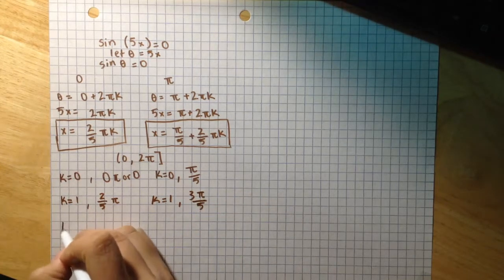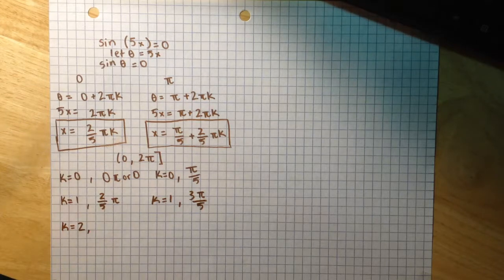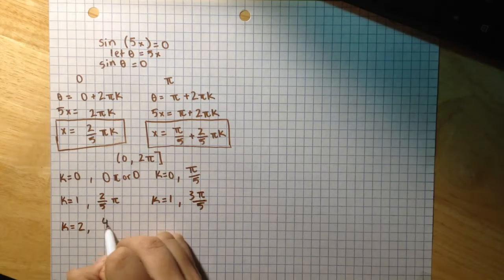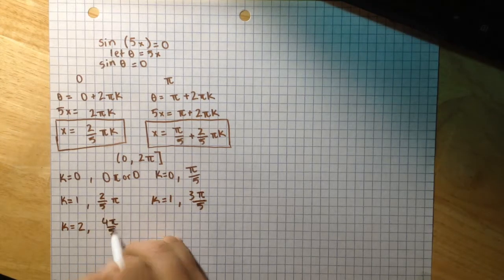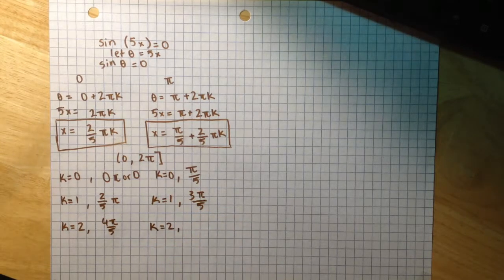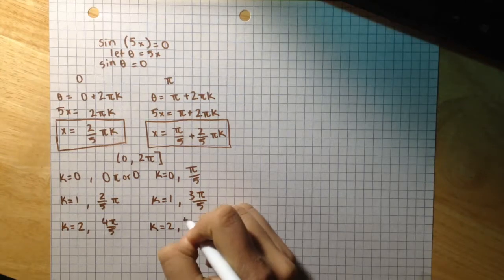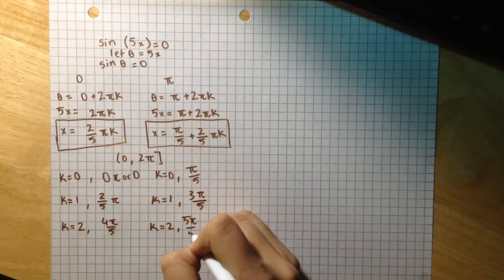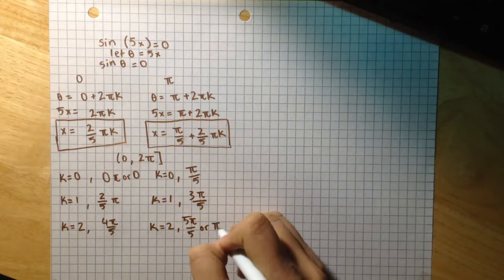Next, if I substitute 2 into this equation, I get 4π/5. And if I substitute 2 into this equation, I get 5π/5 or π simply.